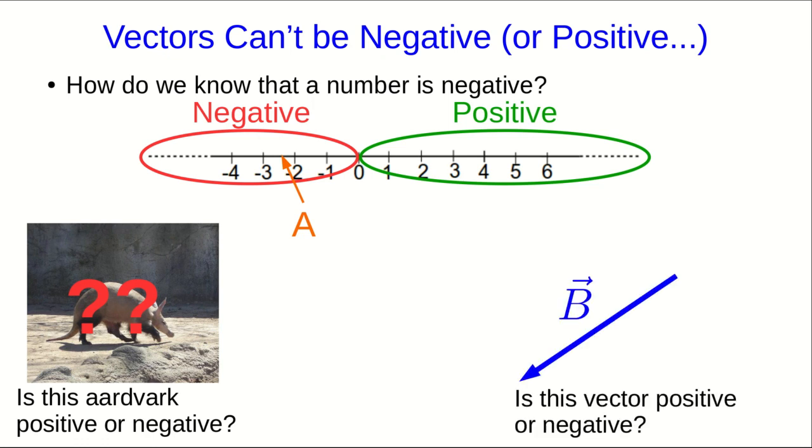Well, so is this vector positive or negative? Well, I hope you see that this is exactly as ridiculous as the question about the aardvark. The vector doesn't live on a number line because it isn't a number, it's an arrow. And so it's totally meaningless to ask whether it's positive or negative. And similarly, it's totally meaningless to describe a vector as either positive or negative.